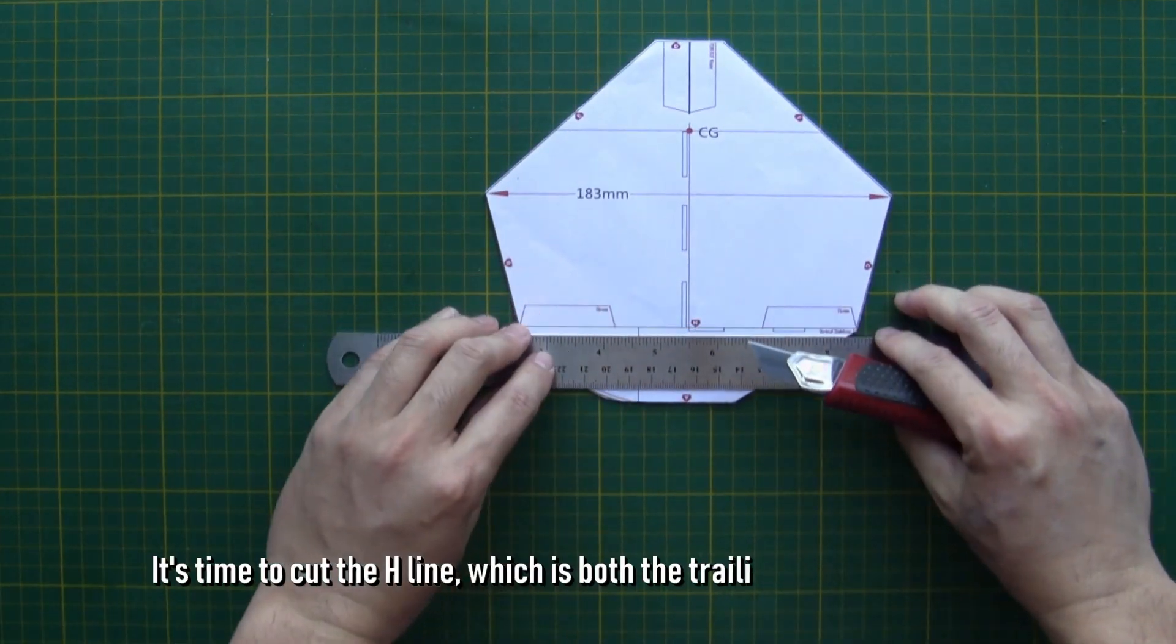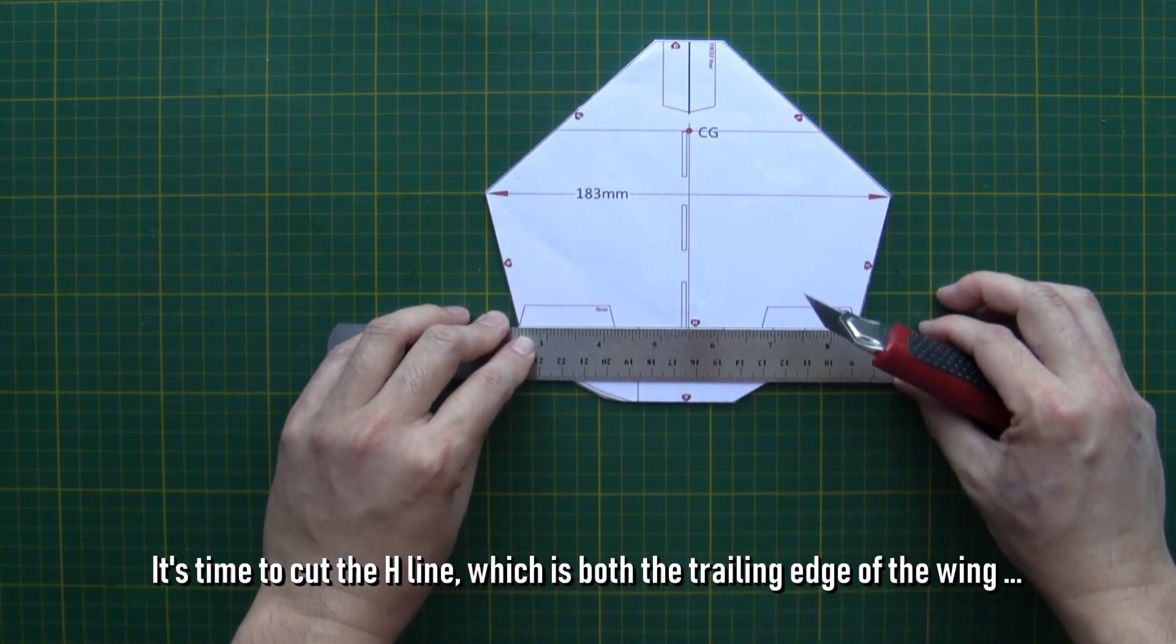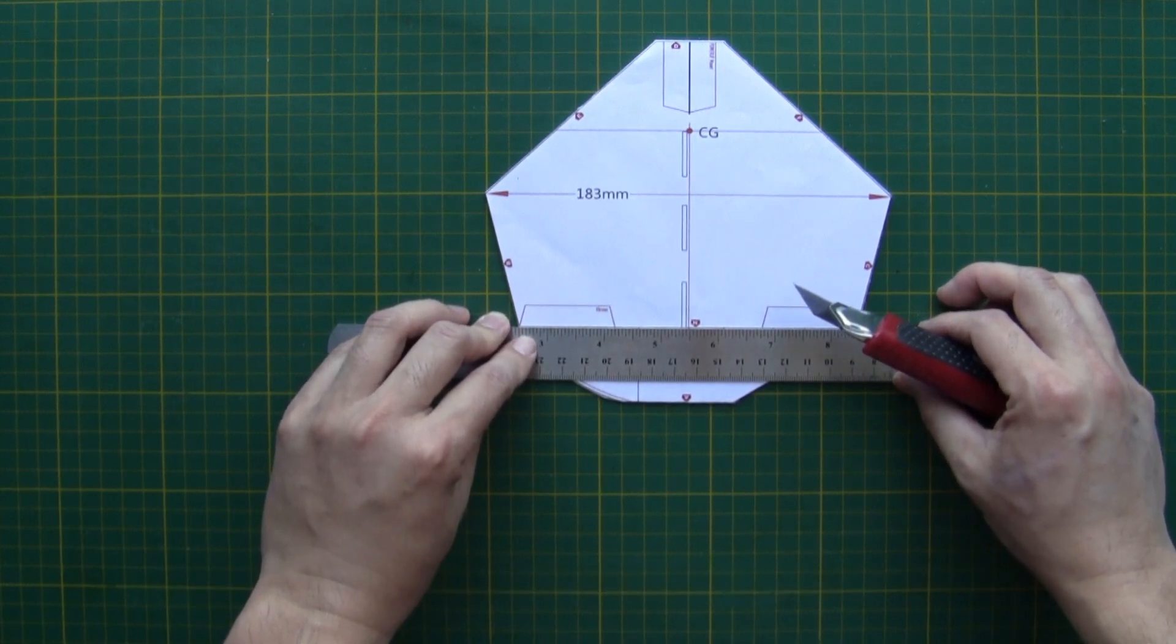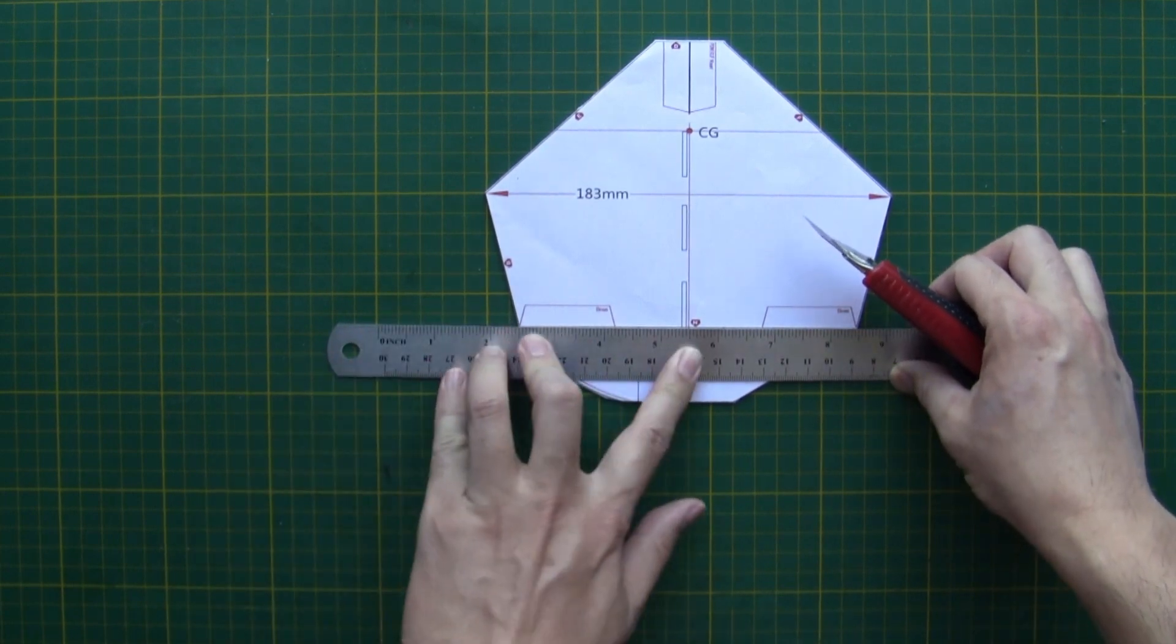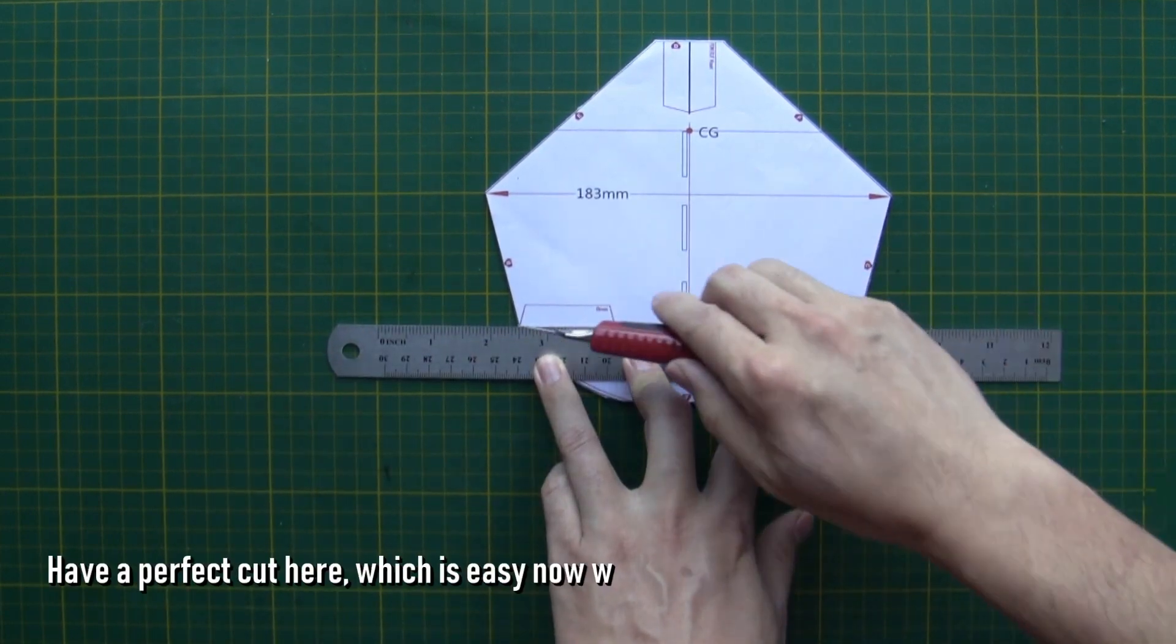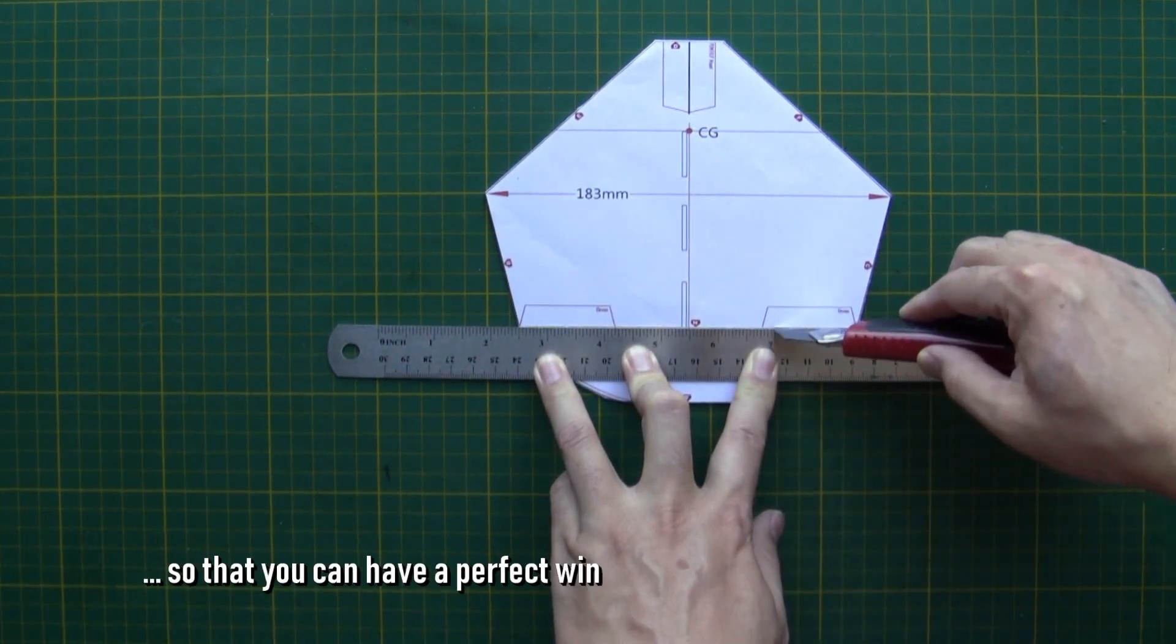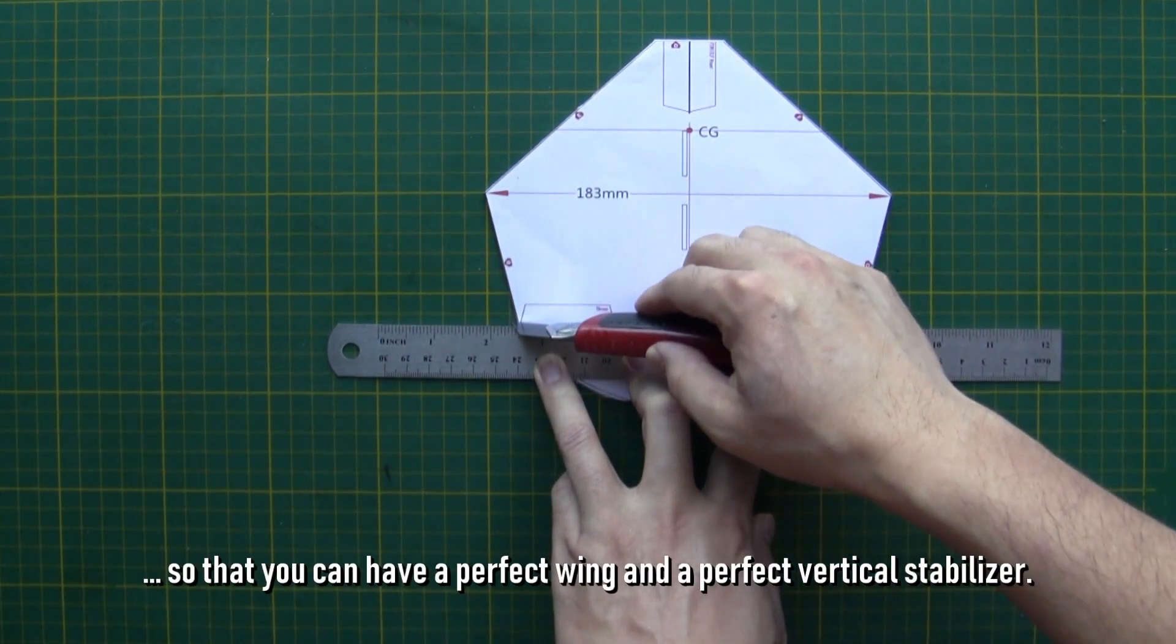It's time to cut the H line, which is both the trailing edge of the wing and the root of the vertical stabilizer. Have a perfect cut here, which is easy now with a solid support of the cutting mat, so that you can have a perfect wing and a perfect vertical stabilizer.